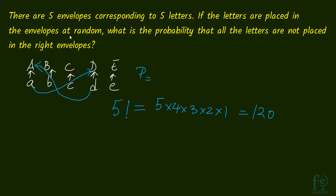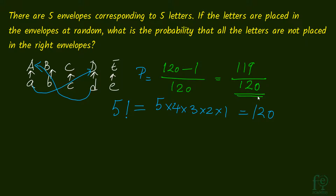So what is the probability? How many ways are there to arrange so that all the letters are not placed in the right envelopes? It will be 120 minus 1, since there is only 1 way in which all the letters can be placed in the right envelopes. So there will be 119 favorable events and 120 total events.